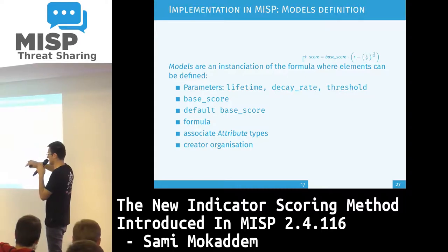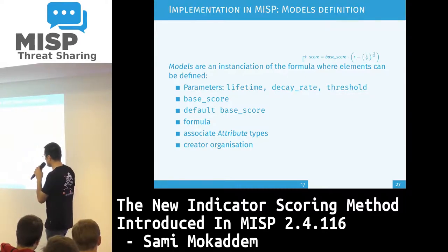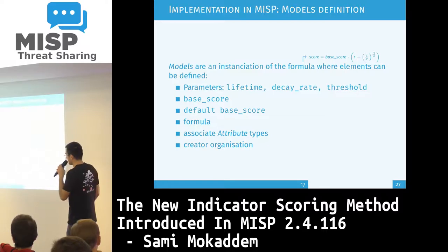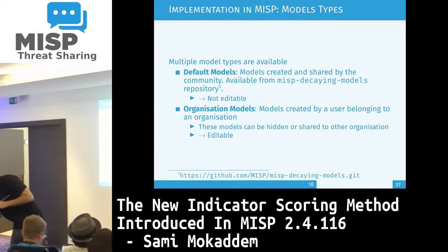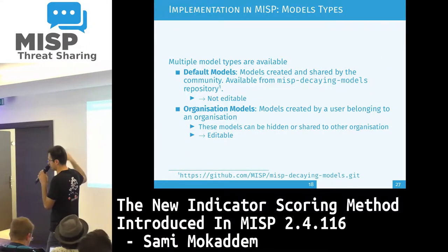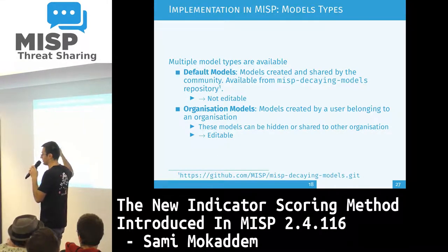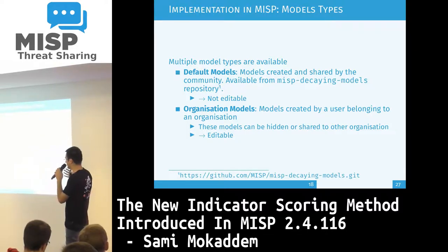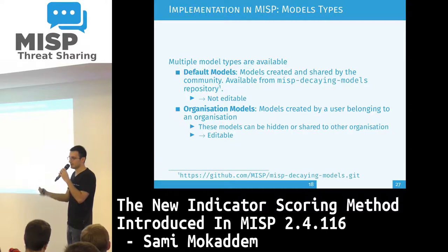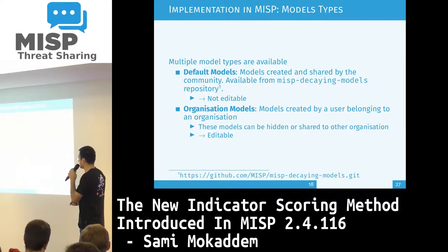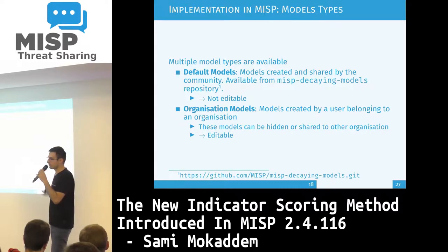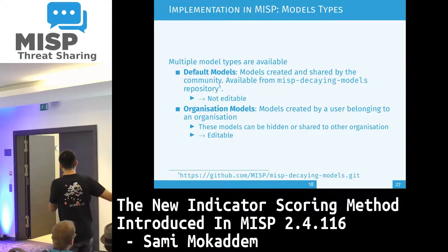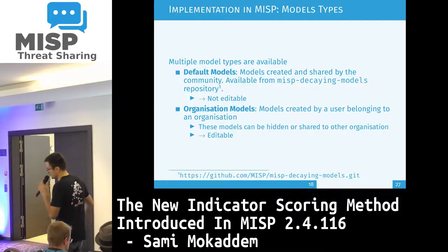This is how you can set the mapping between attribute types and models. You can also associate the model with a creating organization, share it with others, and so on. There are two types of models in MISP: default models, which come from a repository similar to galaxies and taxonomies — you just update them to immediately get all predefined models in the system. And organization models, which you create and adjust to your use cases. Default models are not editable except by editing the JSON or doing a pull request on the MISP decaying model repository; organization models are fully editable.